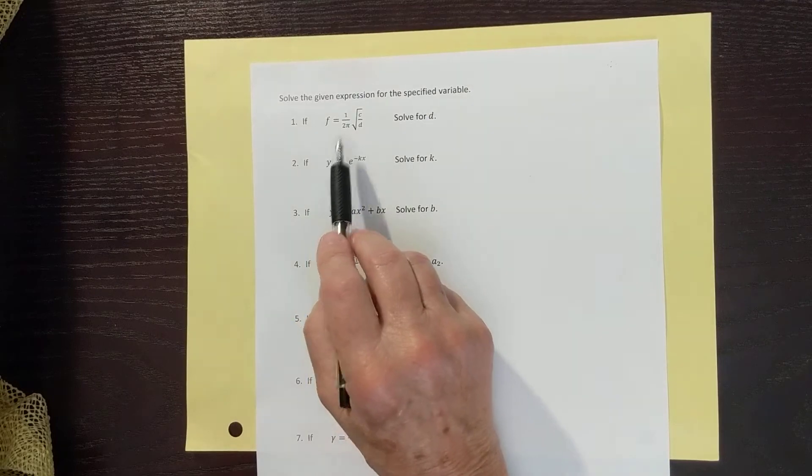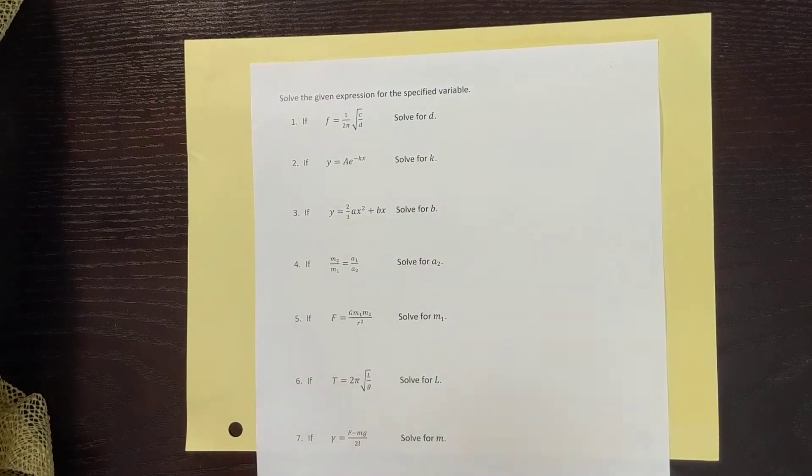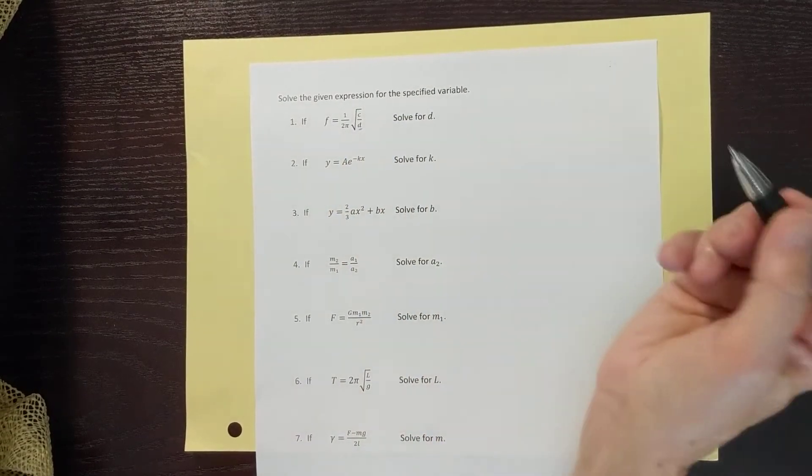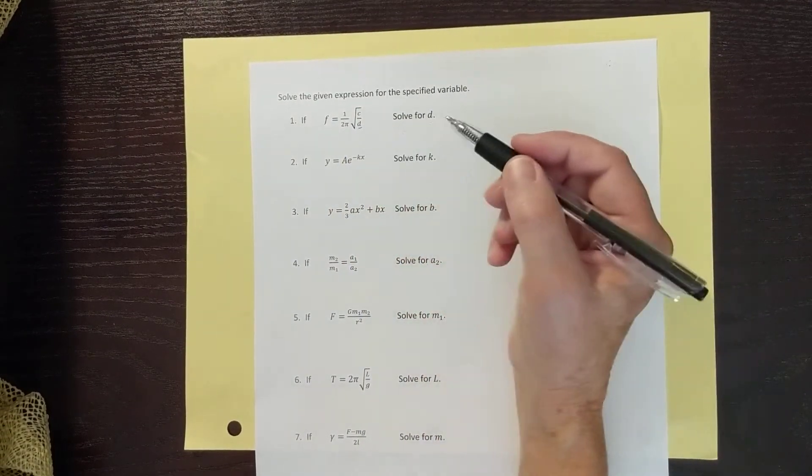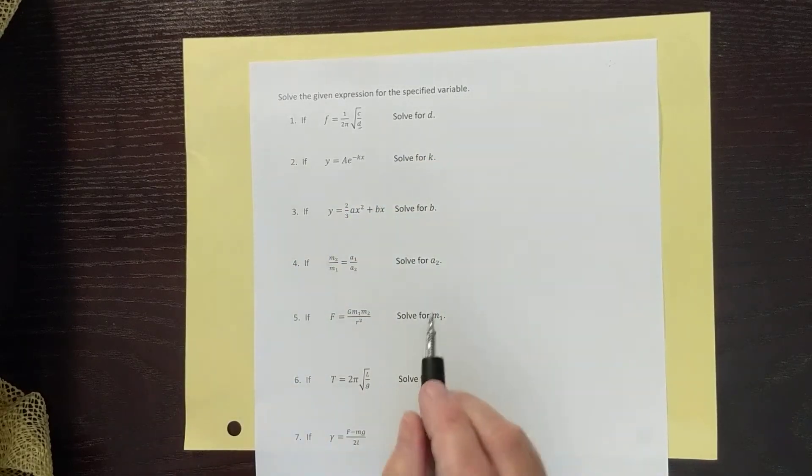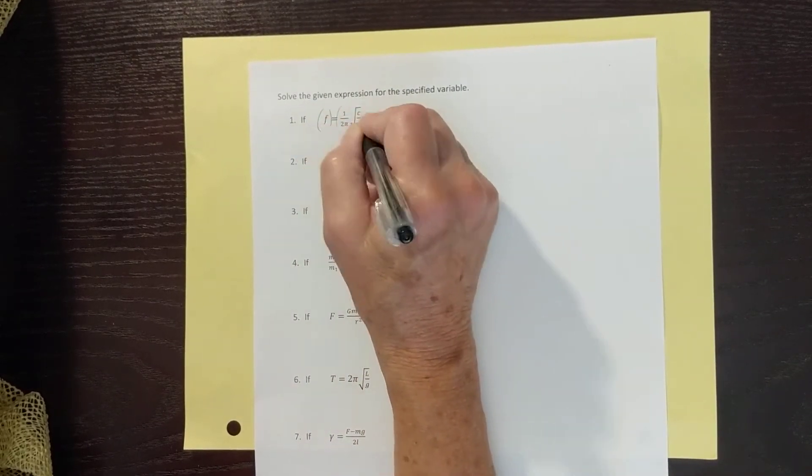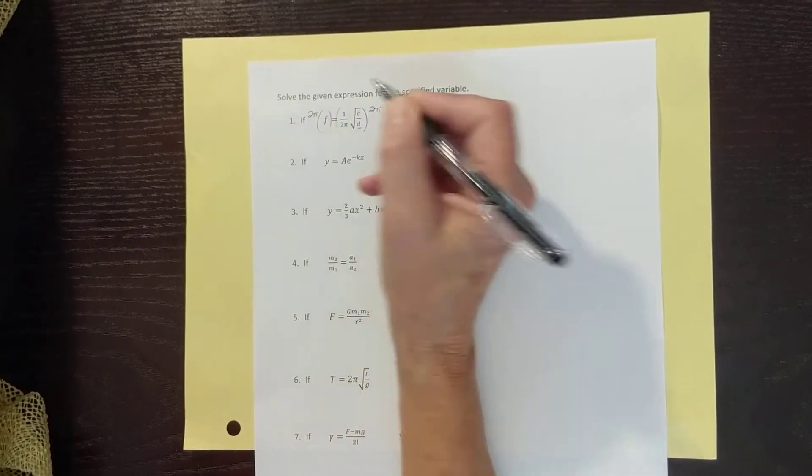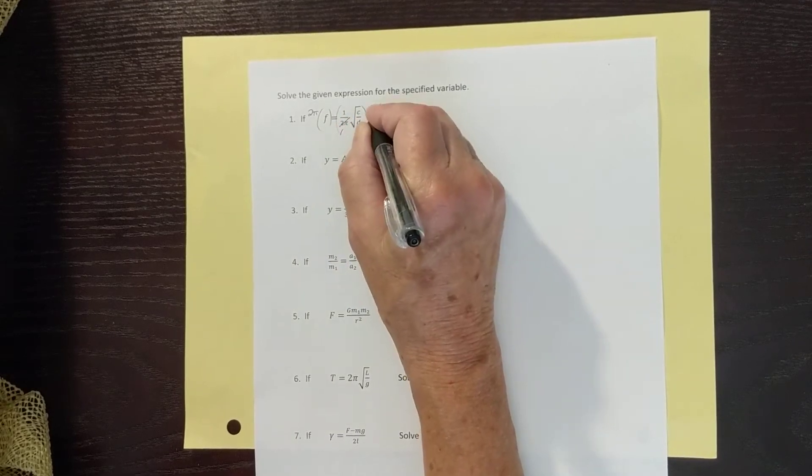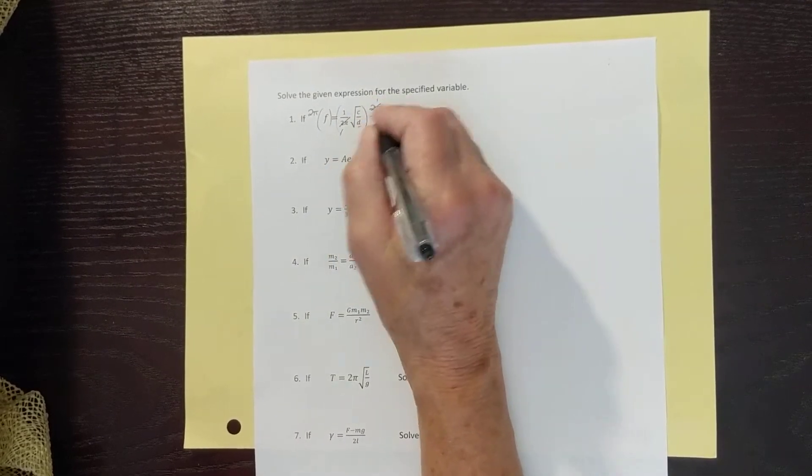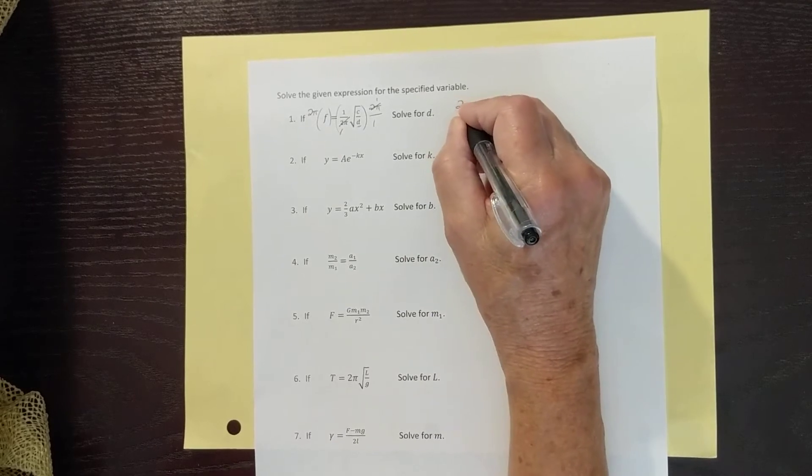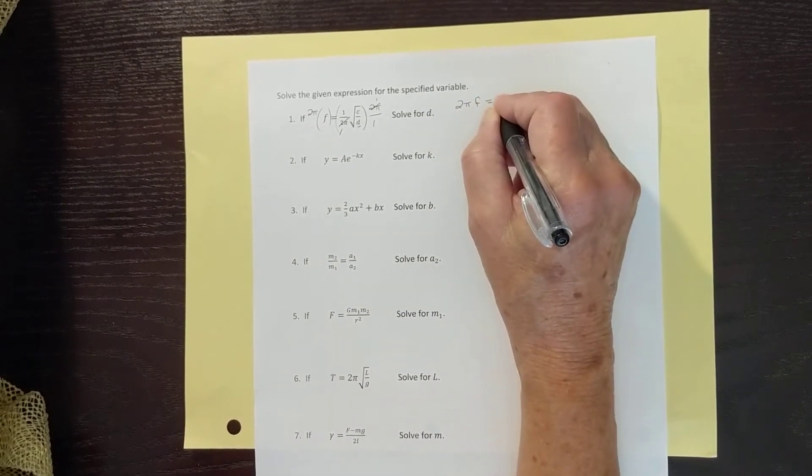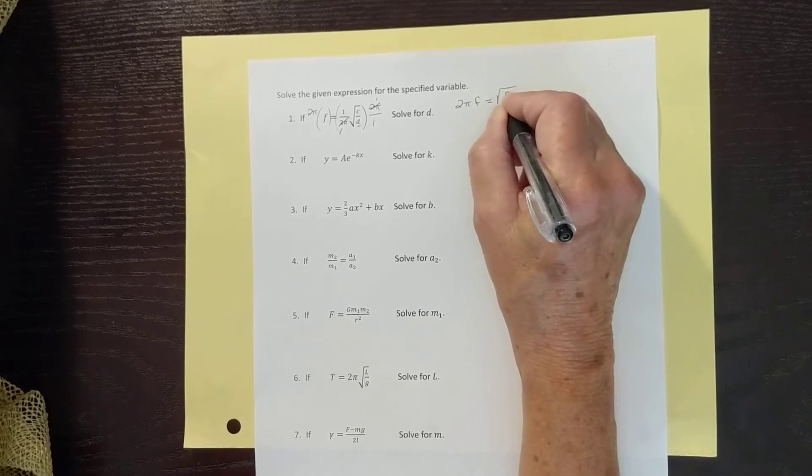If f is equal to 1 over 2π times the square root of c over d, solve for d. If we have to solve for this variable down here, d, what we're going to do is isolate it, get it by itself. So first thing I'm going to do is kill the fraction. Multiply both sides by the denominator 2π. And so these divide into each other. So what we get is 2πf is equal to the square root of c over d.